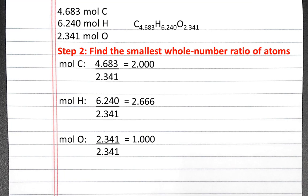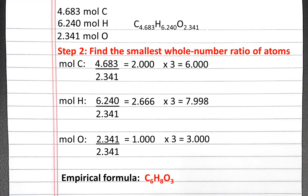I want to get whole numbers, and right now moles of hydrogen is 2.666. I want to get rid of the decimal — 0.666. I know that 0.666 is two-thirds, so I can multiply all three of these numbers by 3 to eliminate the decimal. When I multiply all these numbers by 3, I'll have 6 moles of carbon, 8 moles of hydrogen, and 3 moles of oxygen. So my empirical formula is C6H8O3.